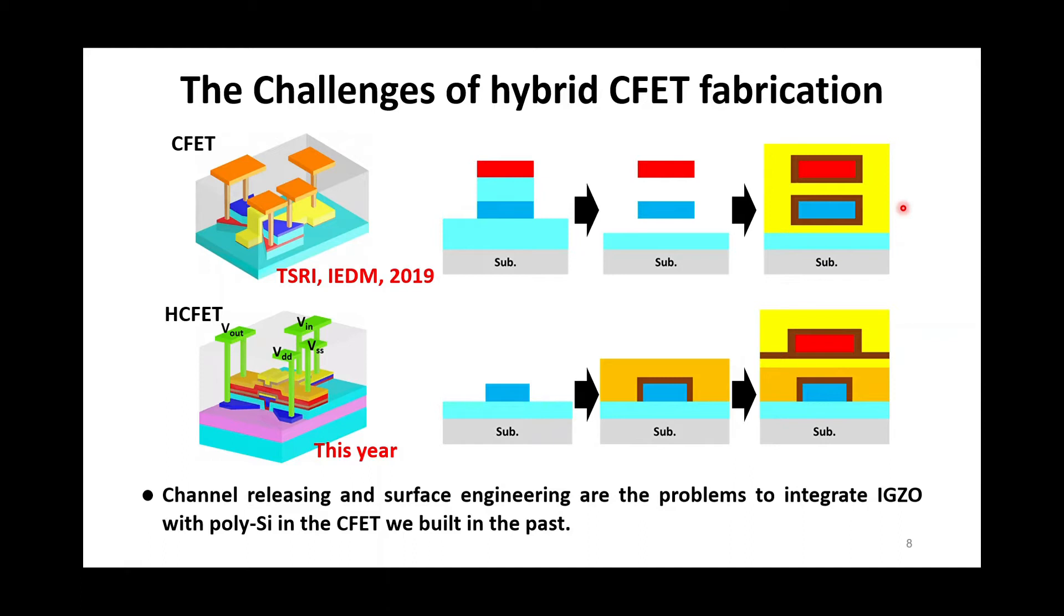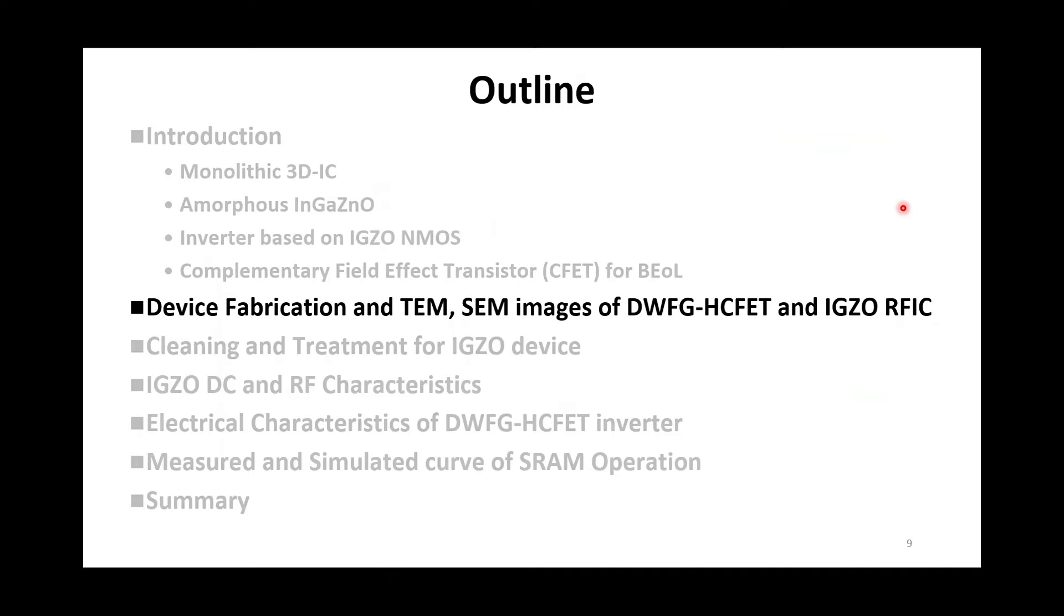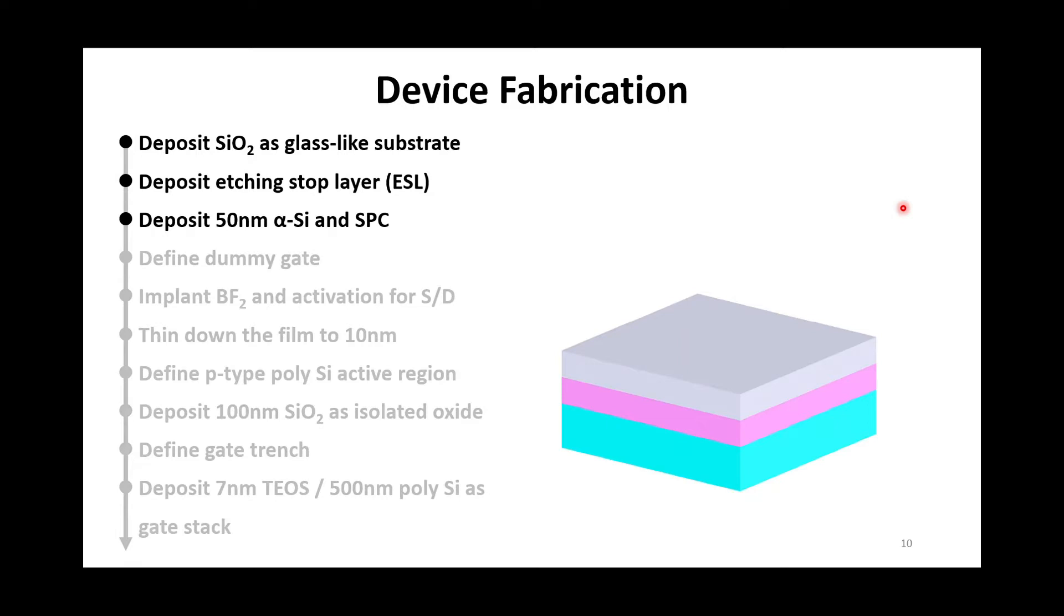So let's check how we fabricate it. First, a substrate with the buried oxide is prepared for emulating the structure when we implement SOI or SOP. Then an etching stop layer and amorphous silicon was deposited by CVD, followed by solid-phase crystallization.